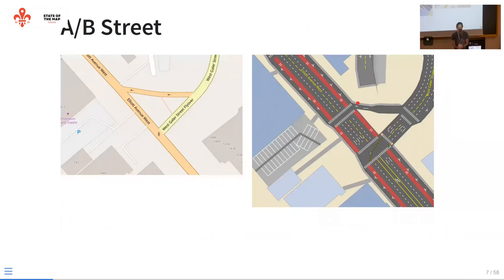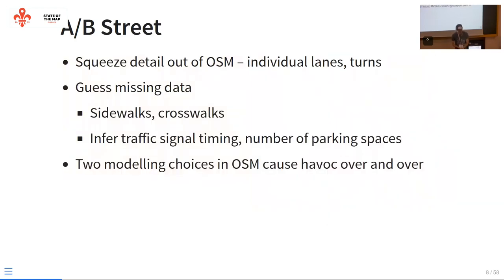AB Street attempts to interpret OpenStreetMap lane tagging information in increasingly detailed ways. On the left is an example in Seattle — looking at the default carto rendering, you don't really have an idea of what's on this road. But if you interpret the lane tagging, you can see there are bus lanes, there's parking, and you can see the width of the road and start to imagine other uses for that space. The import process does a lot of steps — guessing missing data, inferring traffic signal timing, even guessing the number of parking spots in a parking lot.